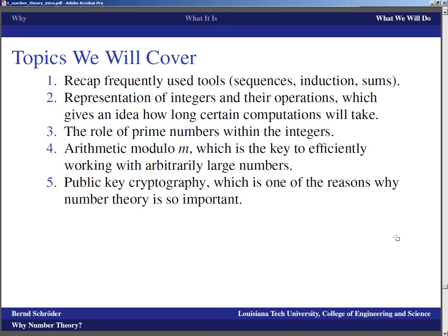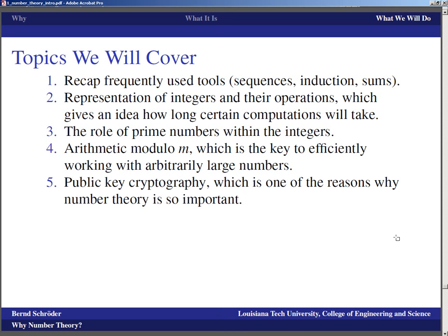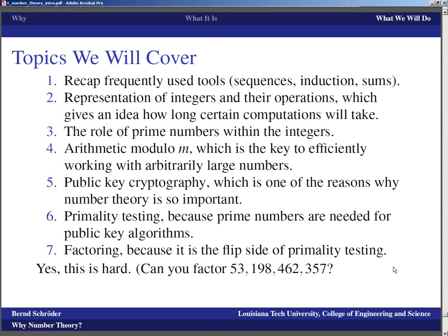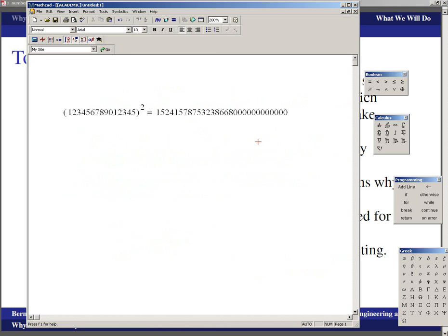Then, of course, there is public key cryptography, and that is one of the reasons why number theory right now is so important. It's not just really cool, it has a huge application in the private sector as well as in the intelligence community. Primality testing is something that we'll talk about, and that's because prime numbers are needed for the public key algorithms. We'll talk about factoring, because basically factoring is the flip side of primality testing. Now, all of this will be hard. We'll be doing proofs, we'll be looking at really sophisticated algorithms. For example, factoring, you think factoring is easy, but can you really factor a number like 53,198,462,357?